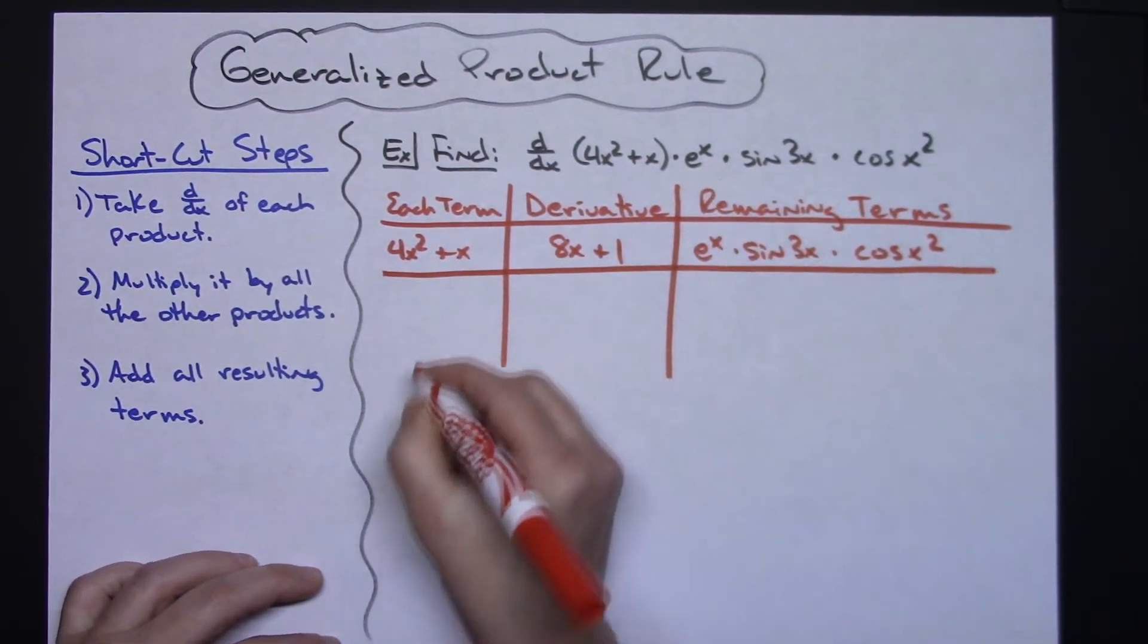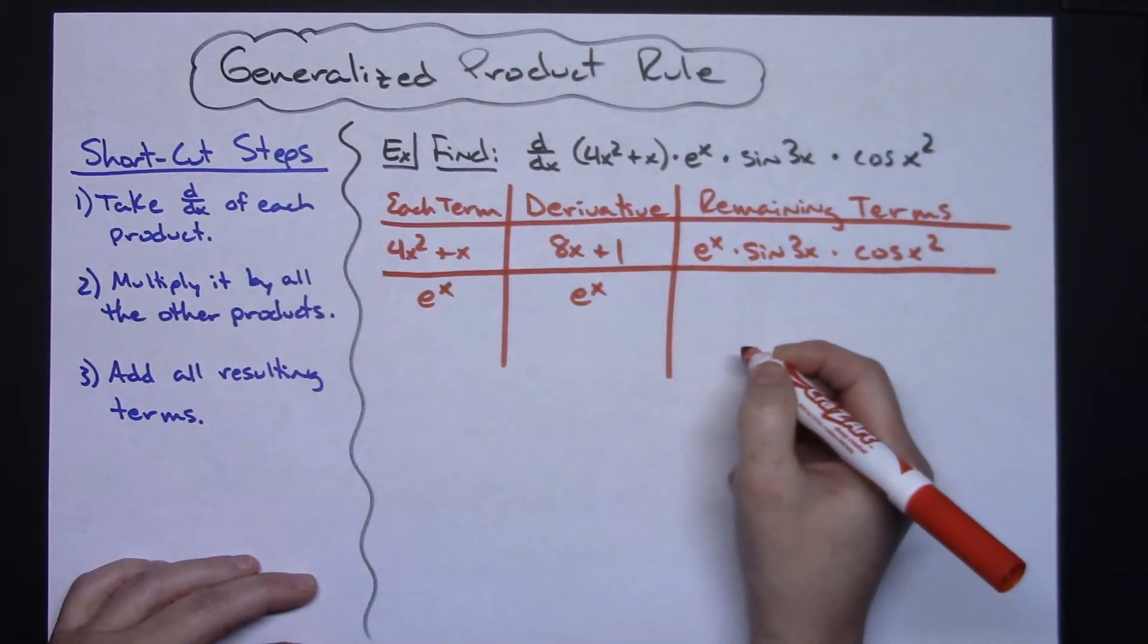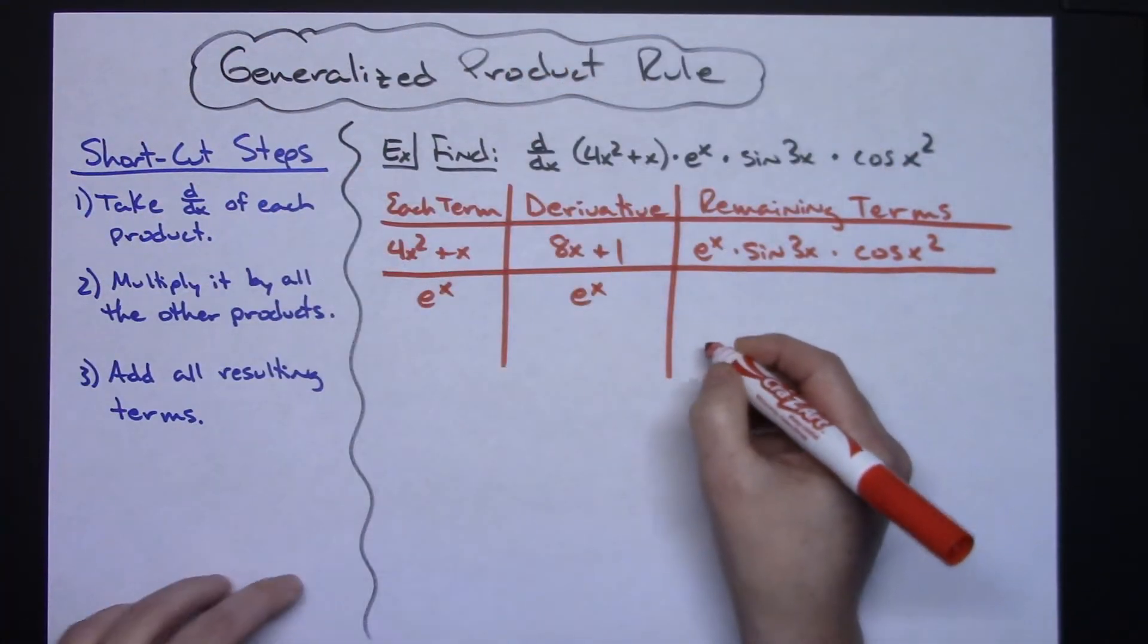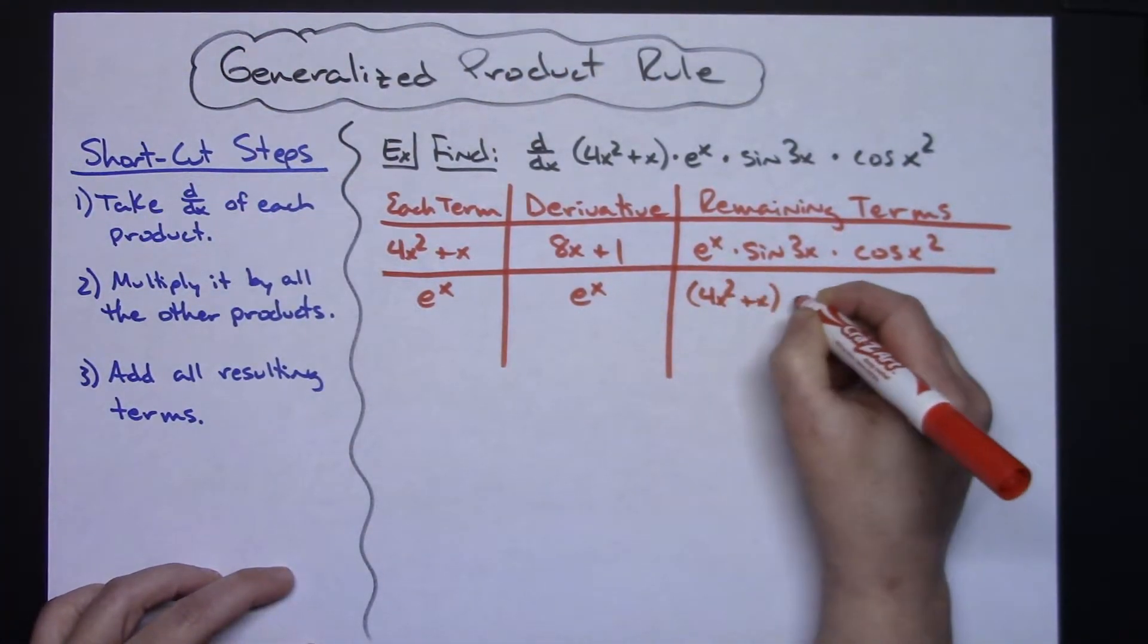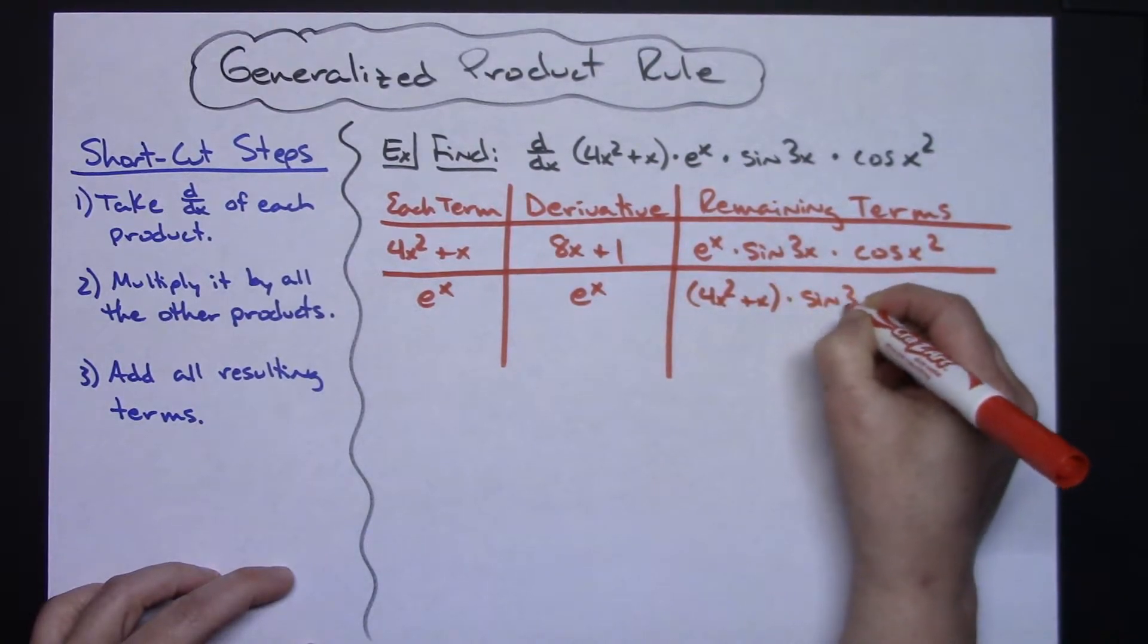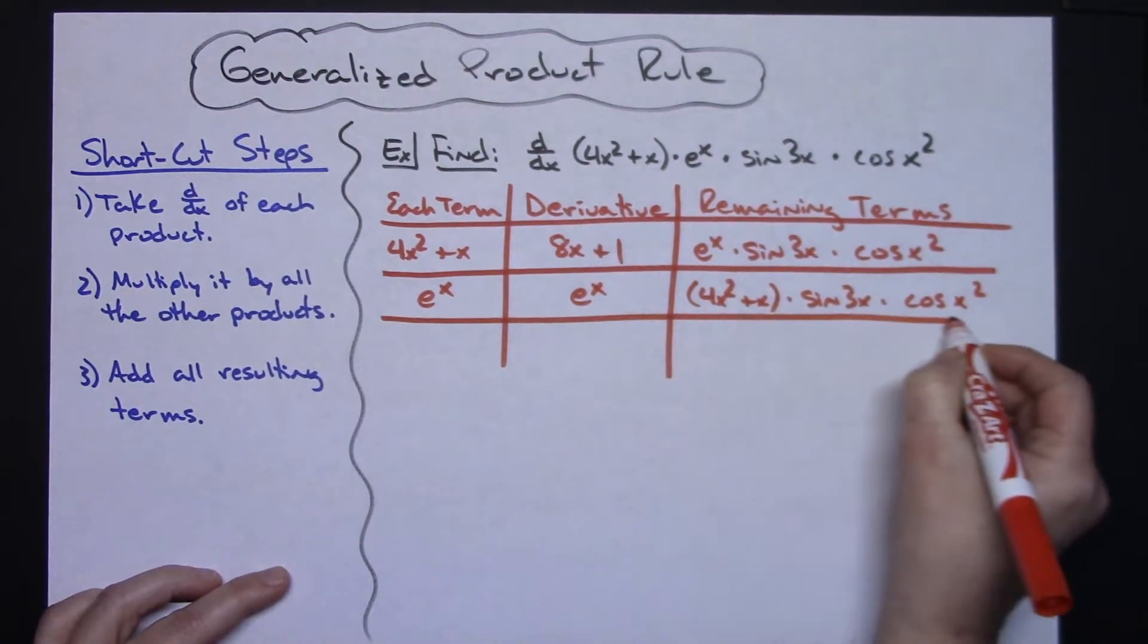Now I'm gonna take my second one which is gonna be e to the x. I take the derivative of that, I'm gonna have e to the x. Now all the remaining terms would be the 4x squared plus x and the sine 3x and the cosine x squared. So there my second one is done.